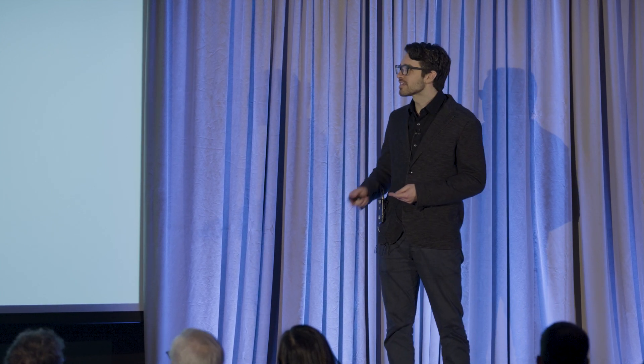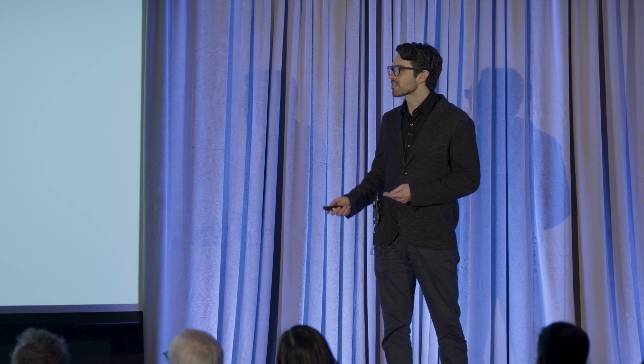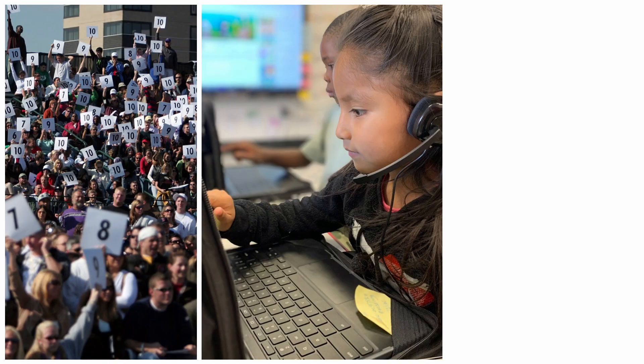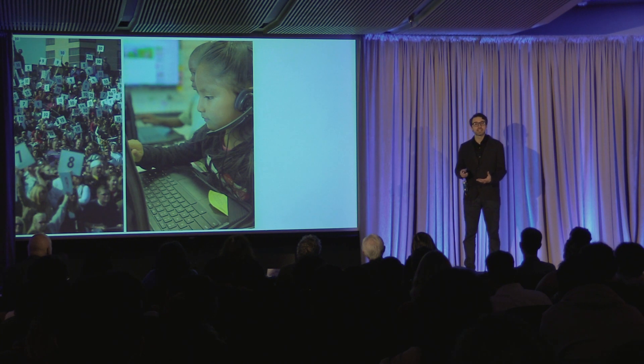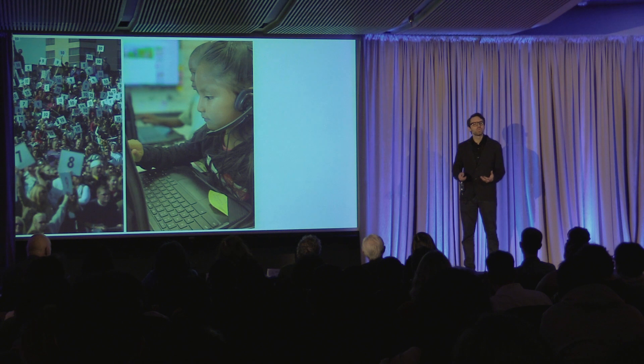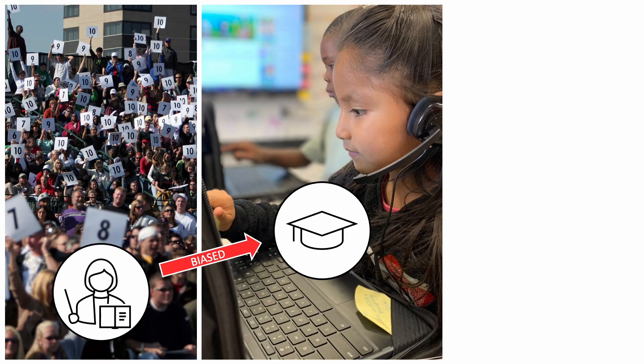First, students speak their answers into a microphone. Their speech is recorded, and then the recordings are scored by human raters. Even though the human raters are trained and monitored over time, they're still unwittingly influenced by implicit bias. This means that students who have a particular accent, for instance, may unintentionally be given a lower score than they deserve and potentially barred from higher education.